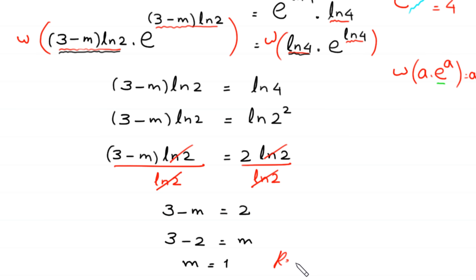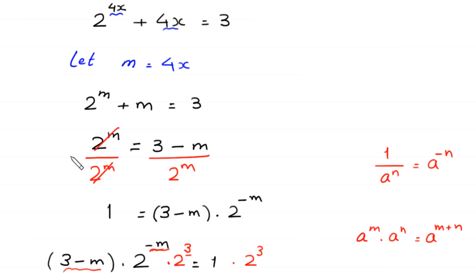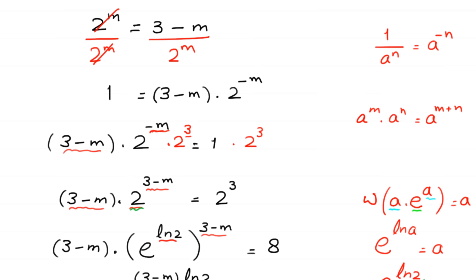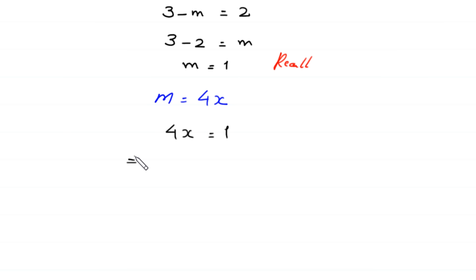Recalling that we supposed m equals 4 times x, we substitute m equals 1. So 4 times x equals 1, which implies x equals 1 over 4. This is the value of x and the final answer to this equation.